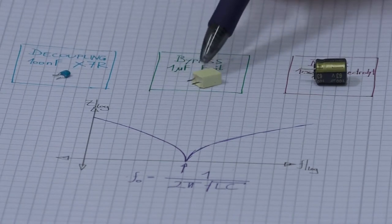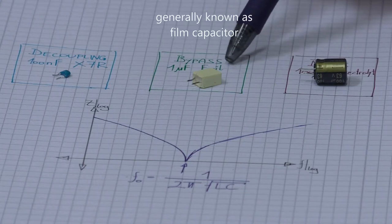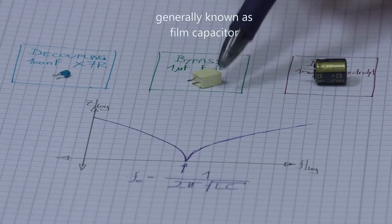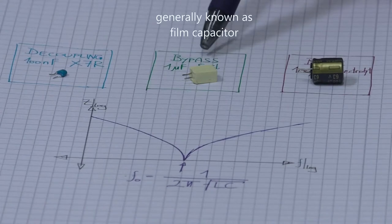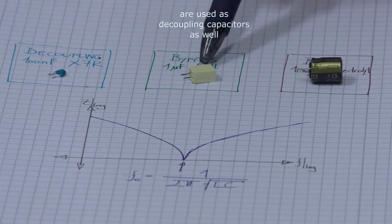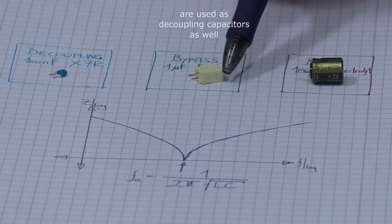Second here we have a 1µF foil capacitor. So this can be used for bypass reasons. So for instance to filter out some unwanted RF emissions.